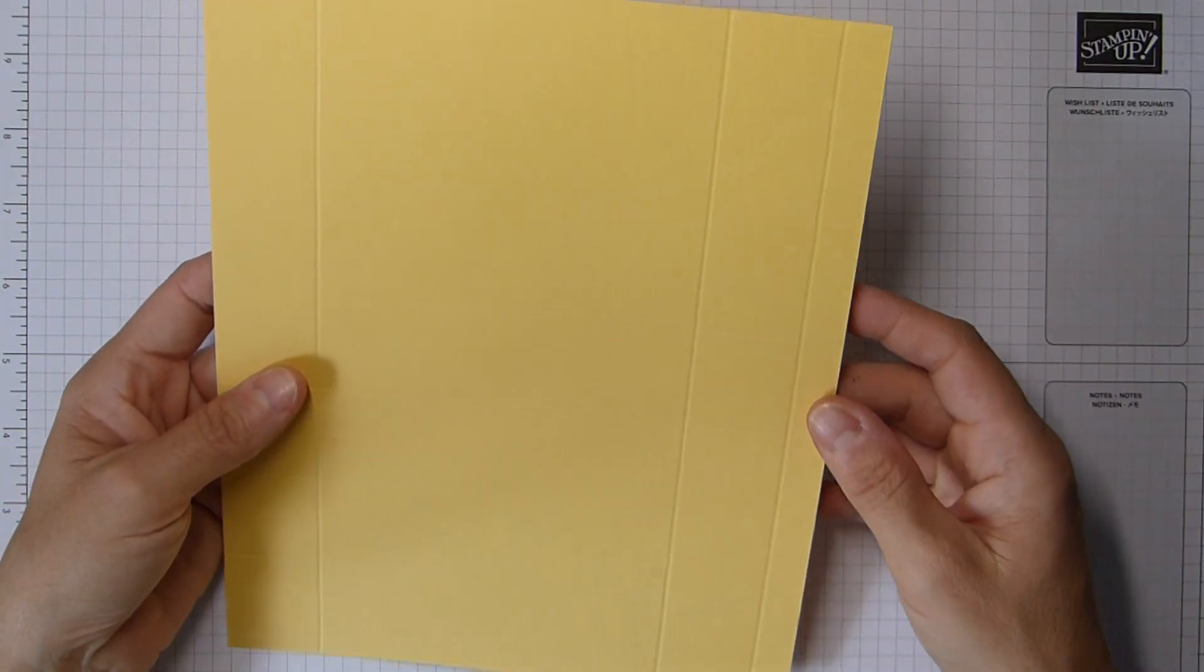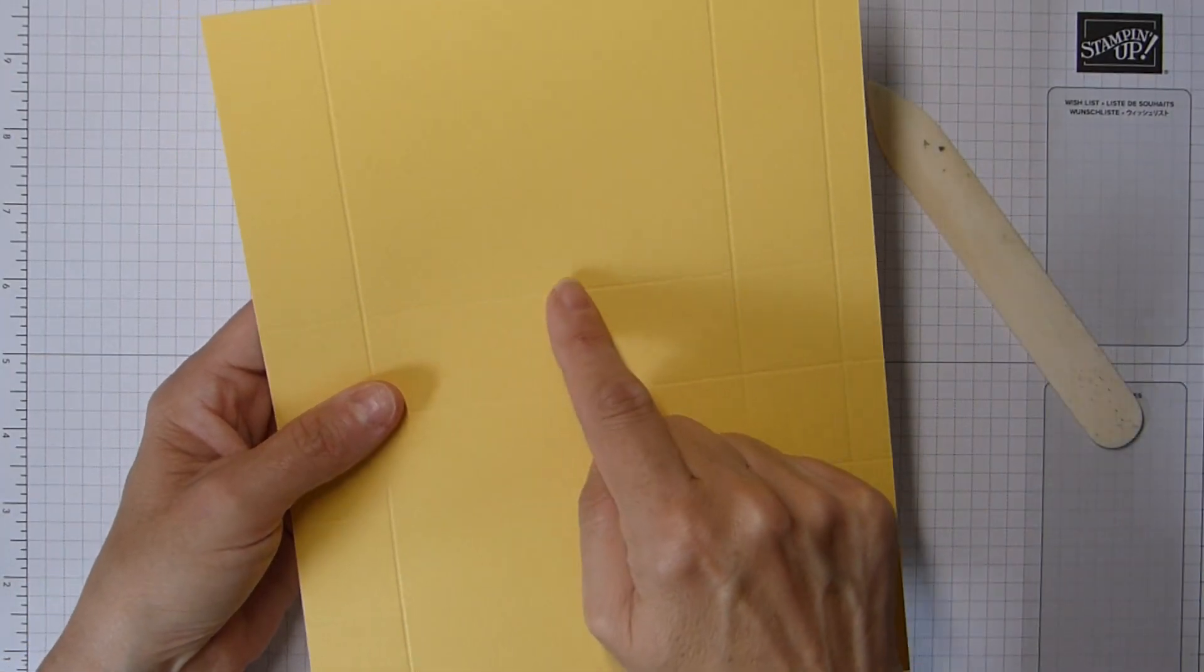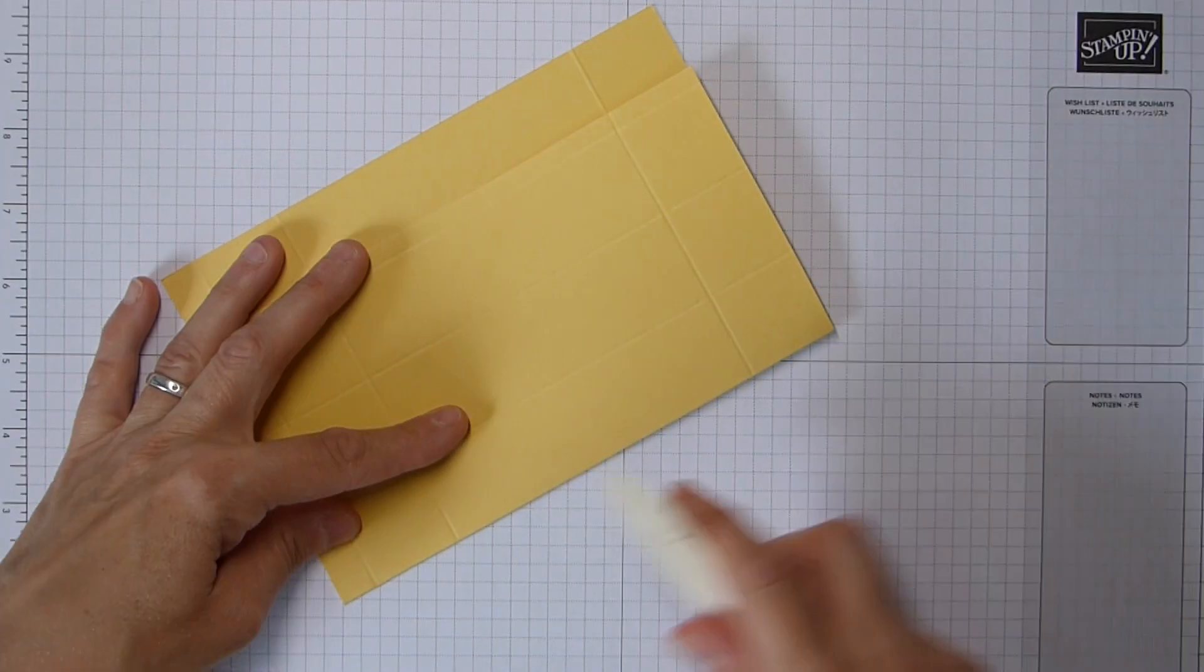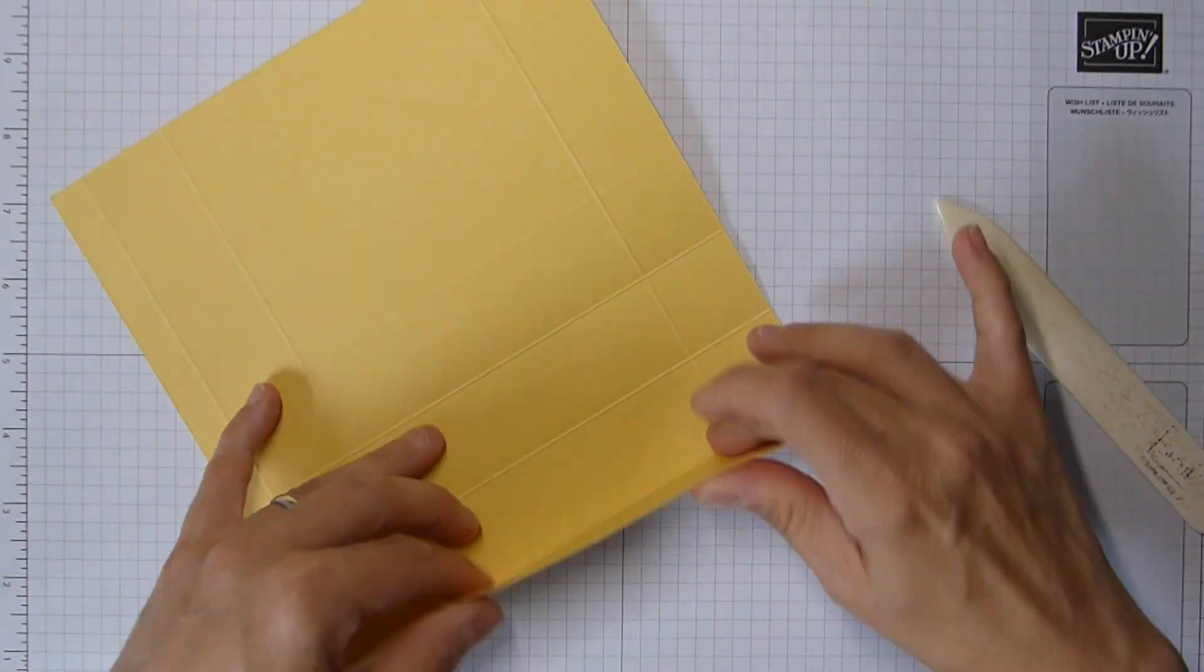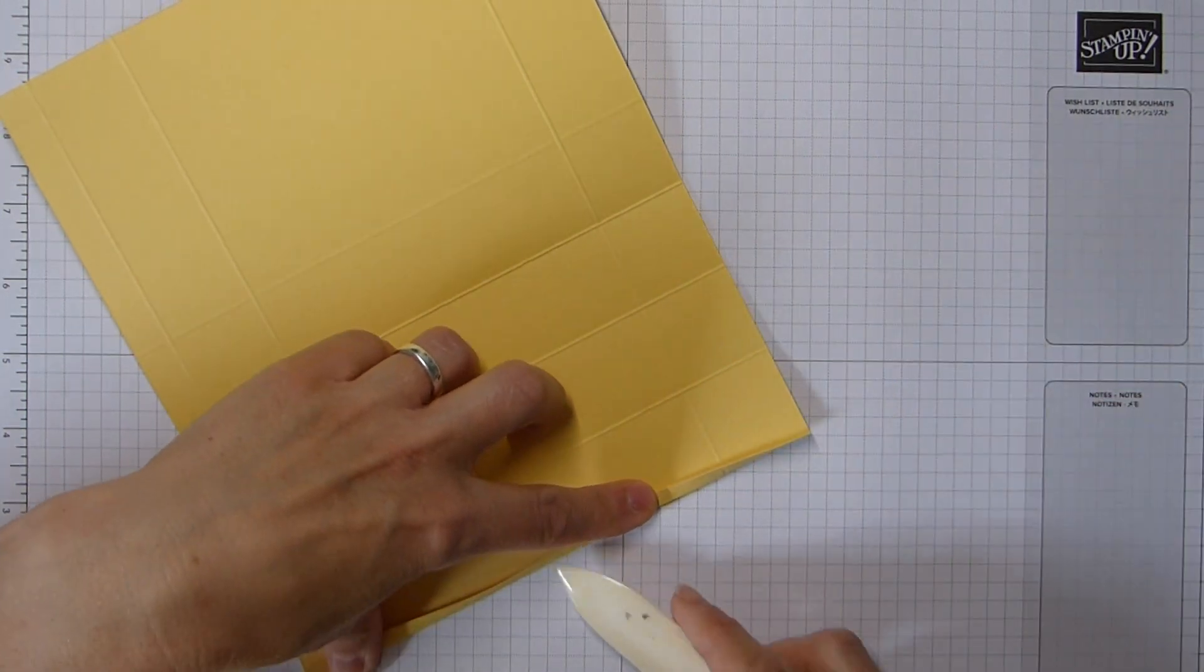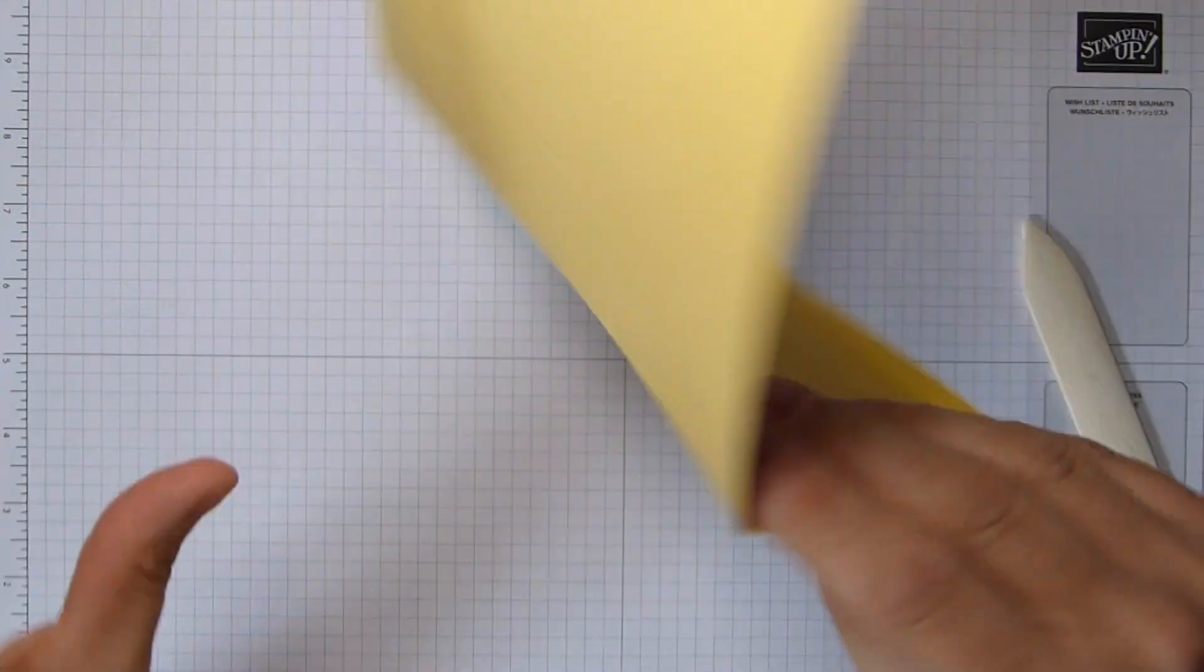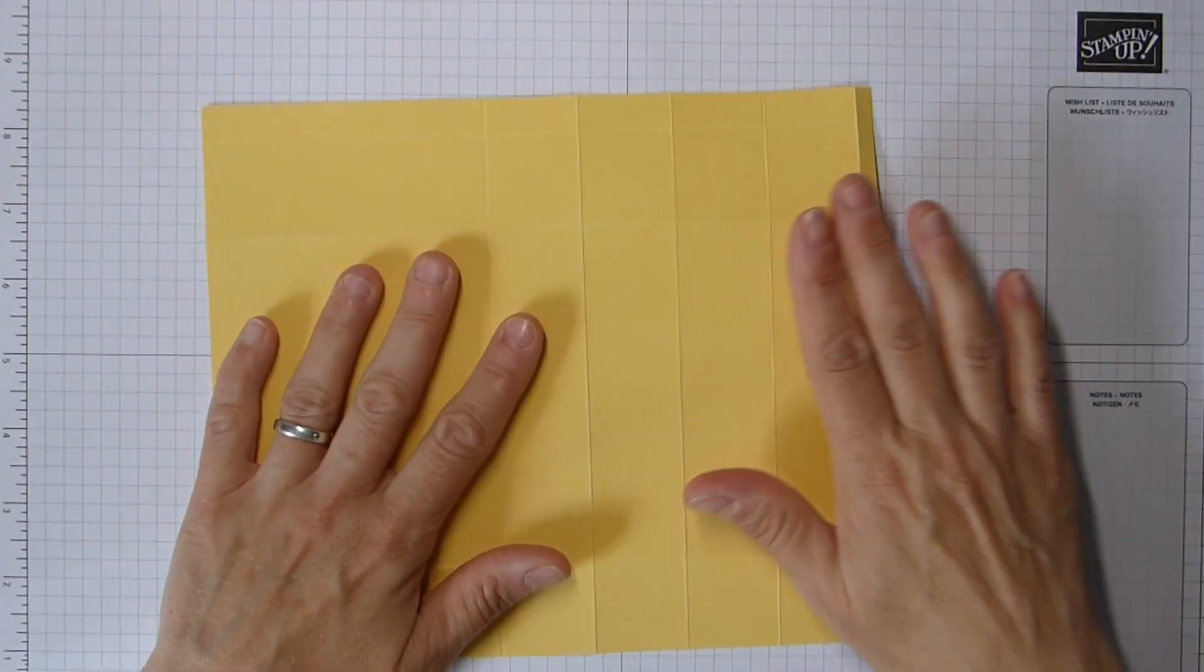When you fold and burnish your score lines, you can do them all except this last one here that's closest to your large panel. Leave that one, because that actually is just there as a guide for folding your box up. So fold and burnish all the other ones. This little one here can be a little bit fiddly. Once you've done all that, we can then do some cutting.